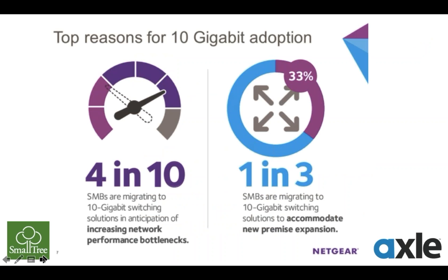I wanted to start out by grabbing a couple of big-picture data points. This is from the folks at Netgear, who make very affordable gigabit switches. They came up with numbers on why people are going to 10 gigabits: about 40% are doing it because they need to solve network bottlenecks — and that makes total sense in our space — and about a third are doing it to handle expansion in terms of number of one-gigabit clients talking to the backbone network.